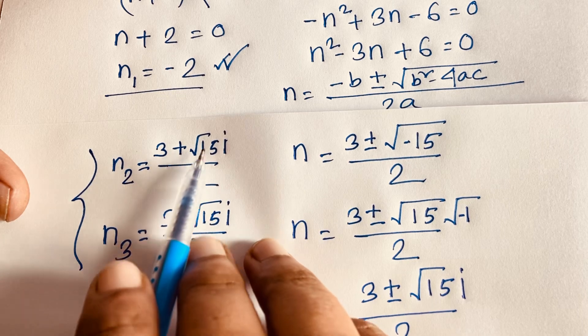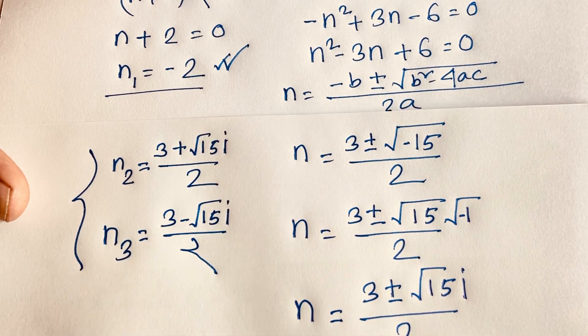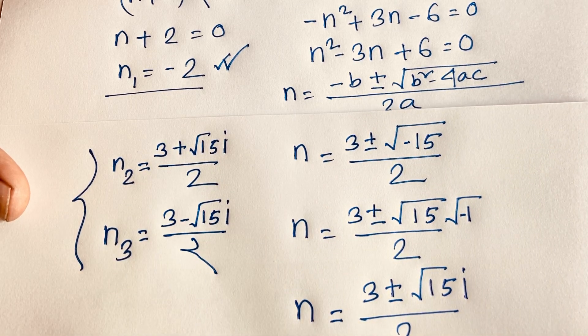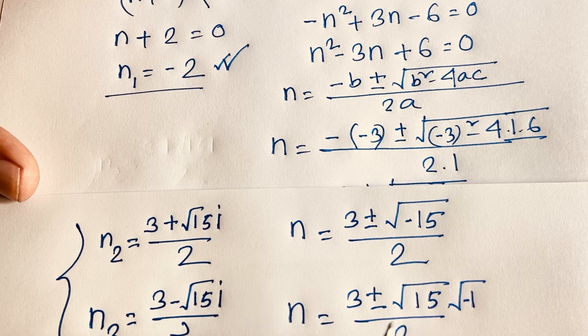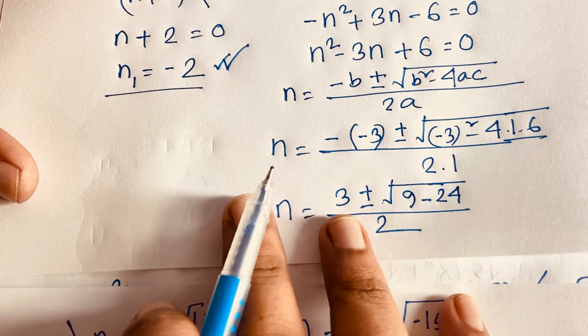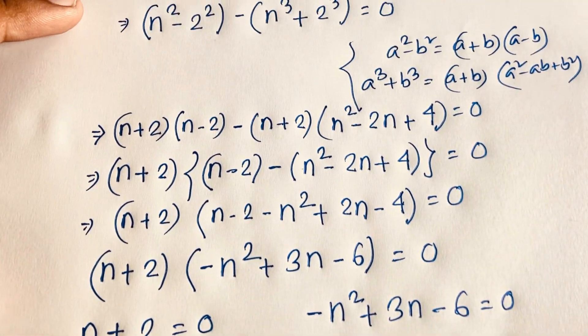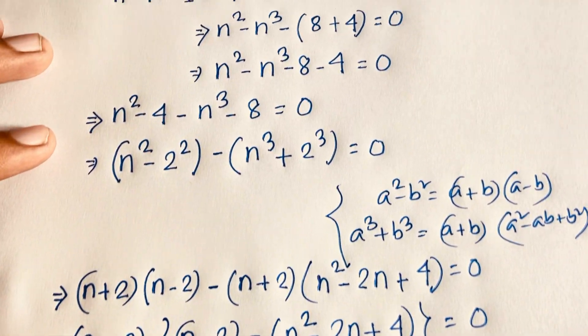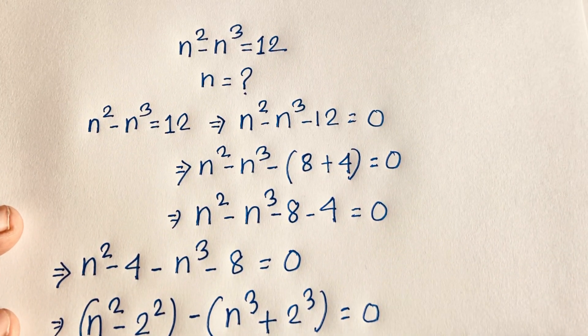The complex solutions are (3 plus square root 15i) over 2 and (3 minus square root 15i) over 2. Thank you all. If you enjoyed this video, please subscribe to my channel for other interesting videos. Goodbye, take care.